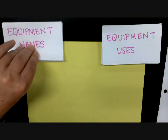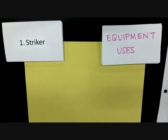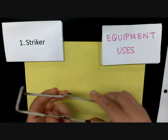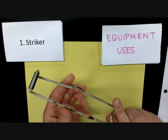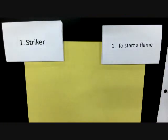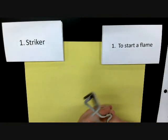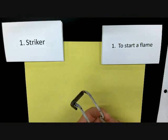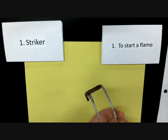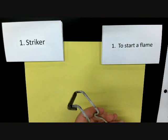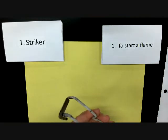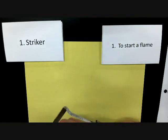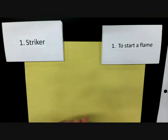The first piece of equipment we're going to start with is the striker. Some people might have seen a striker before — this is what it looks like. Our striker is what we use to start a flame. You rub the flint against the steel and it produces a spark, and that spark will light up our Bunsen burners so that we can have flames for heat and other purposes in lab. Some people might call it a sparker, but I call it a striker.